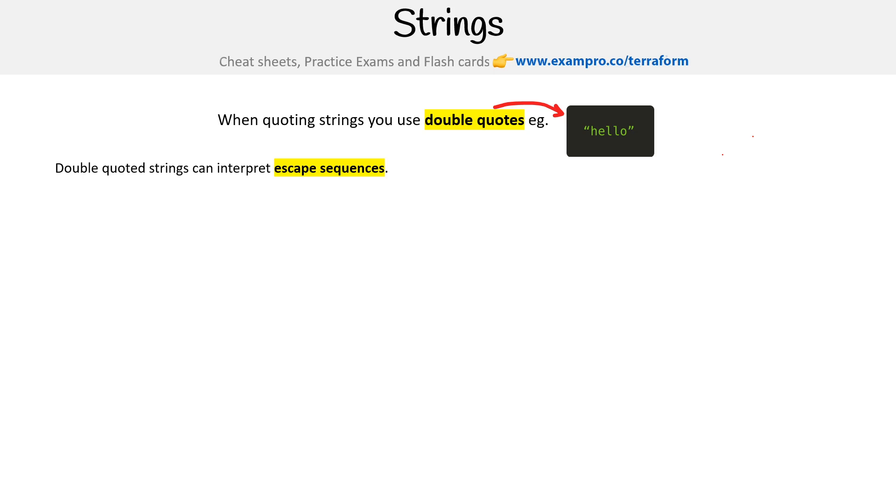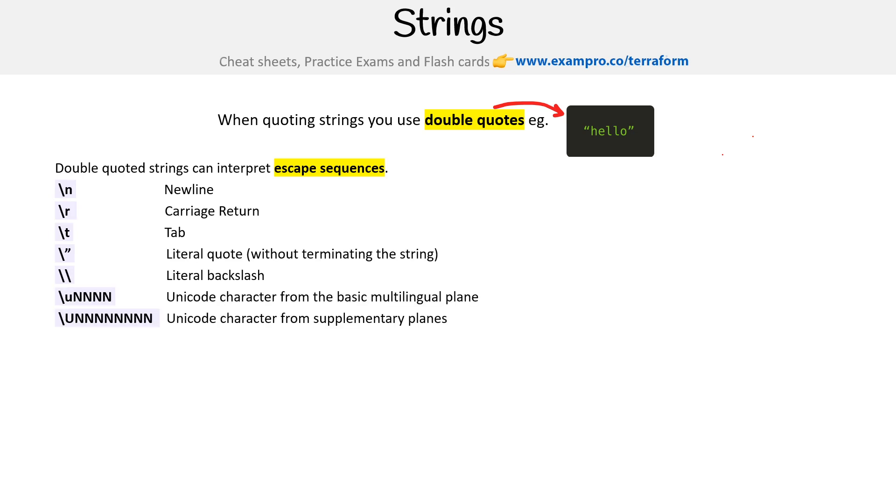But the idea here is you can do things like new line, carriage return tab, literal quotes, literal backslashes, Unicode characters, both basic multilingual plane and supplementary planes.